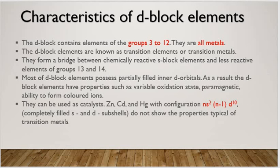Now, characteristics of D block elements. D block elements are there from group number 3 to group number 12. For example, all are metals. The D block elements are also known as transition elements or transition metals. Therefore, a bridge between the chemically reactive S block element and the less reactive elements of group 13 and 14. Most of the D block elements possess partially filled inner D orbitals.